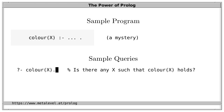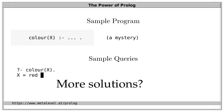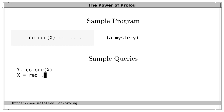We ask the system: is there any x so that color of x holds? When we post this query, we immediately get an answer: yes, this holds if x is red. Now we have several options. We can say that's great and not ask for further solutions. Alternatively, we can press space and get an additional solution: color of x holds if x is green. Pressing space again gives the third solution: x is blue. And this time the system tells us there are no further solutions.